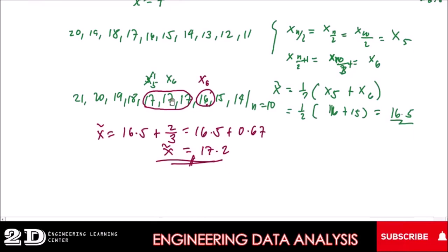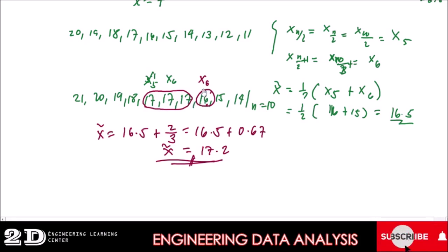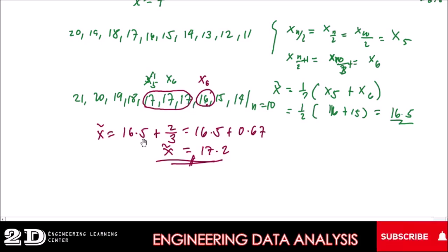In another case where the data also has 10 values, the median falls between the fifth and sixth data values. If both the fifth and sixth positions are 17, we consider those repeated values as one group. We identify that 2 out of 3 of the value 17 are on the nearer side to 16. So the median is 16.5 plus 2/3, giving us our interpolated median.